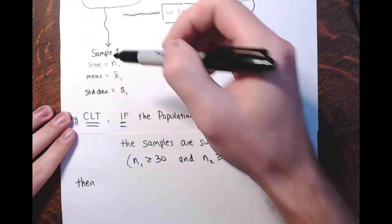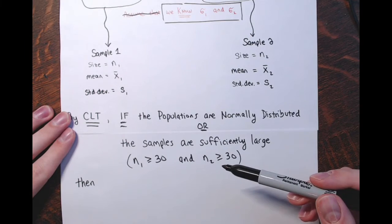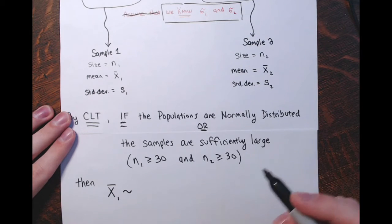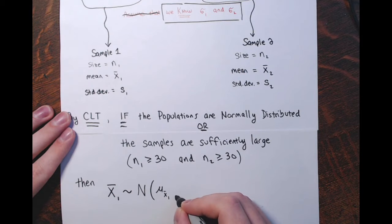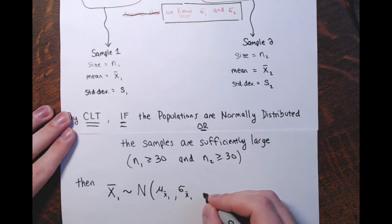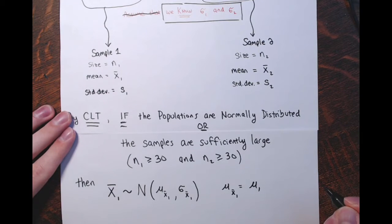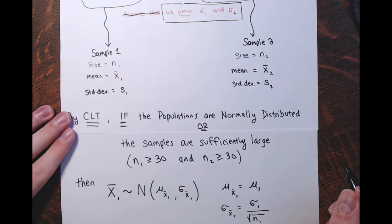If I look at population 1 on its own: I take a sample of size n1, we get a sample mean x-bar 1. If we were to do this for all possible samples of size n1 and look at all the x-bar 1's, the distribution of those x-bar 1's would be approximately normal with a mean of mu sub x-bar 1 equal to mu 1, and a standard deviation of sigma x-bar 1 equal to sigma 1 divided by the square root of n1.